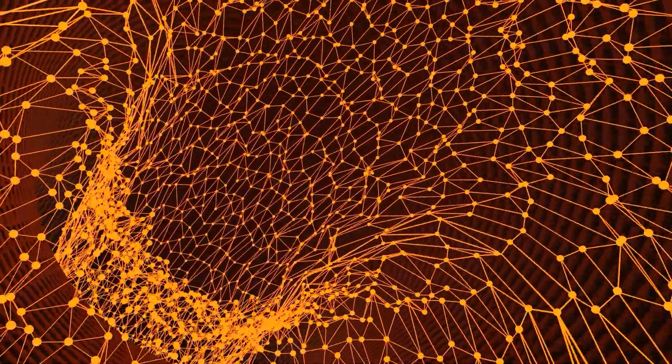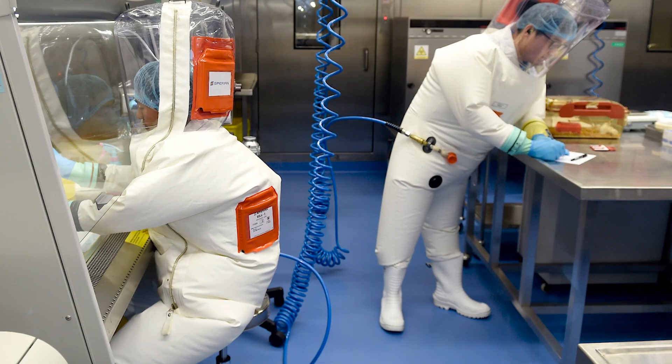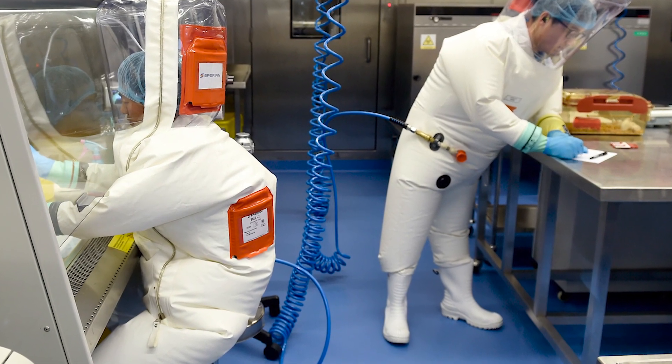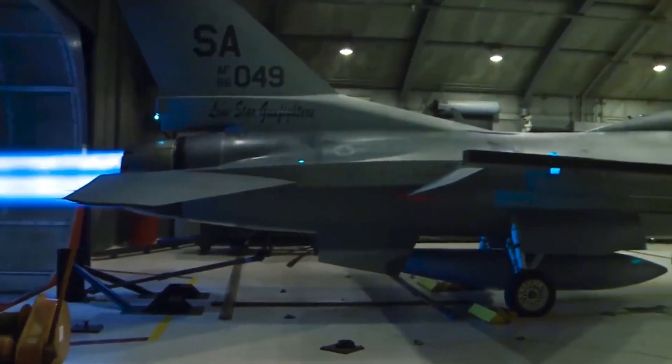To turn a small laboratory model into a real working electric plasma thruster, the researchers in Wuhan need to do lots of tests with different materials and ways of building it. They have to find the right balance between making it powerful and keeping it safe. It's a big job, but they're committed to trying every way they can.